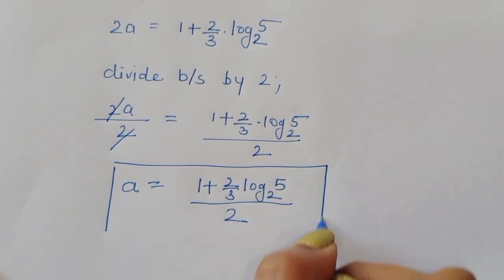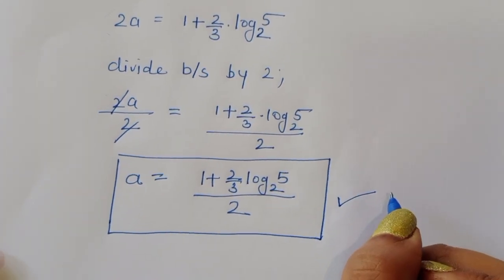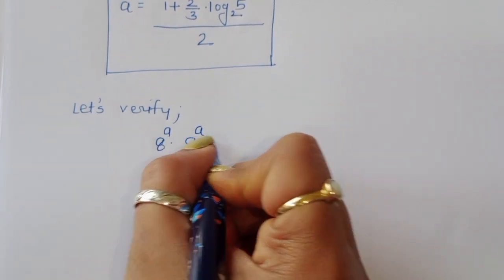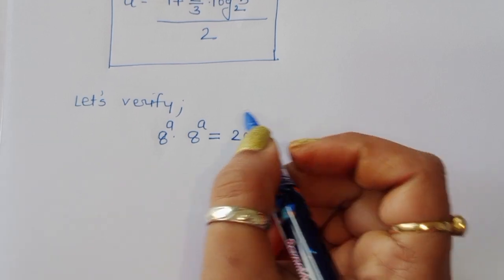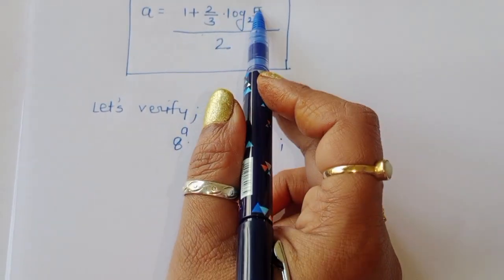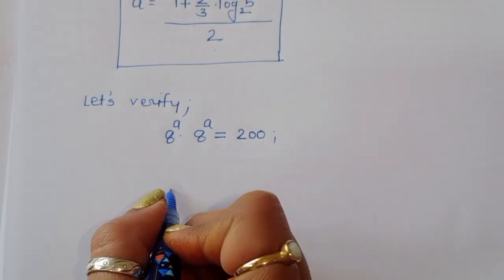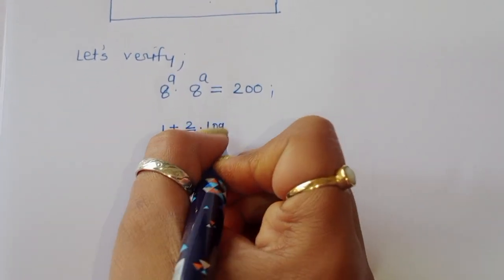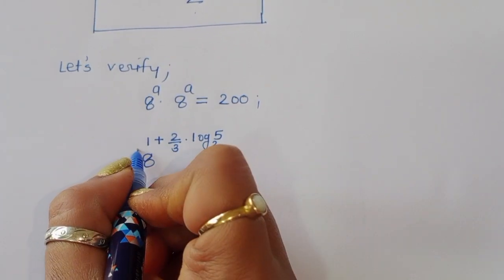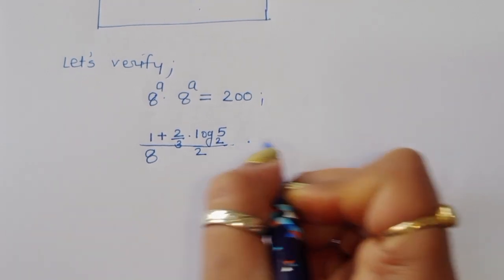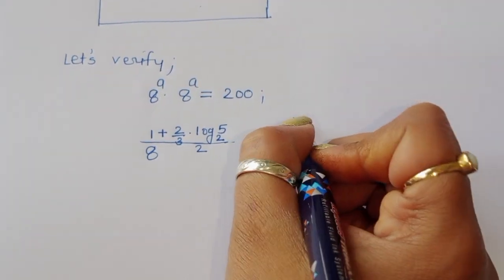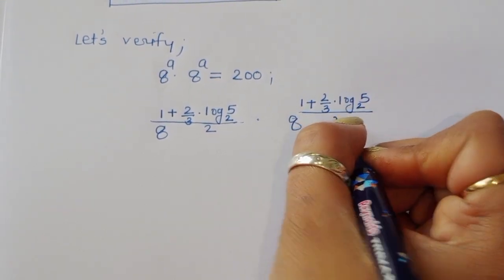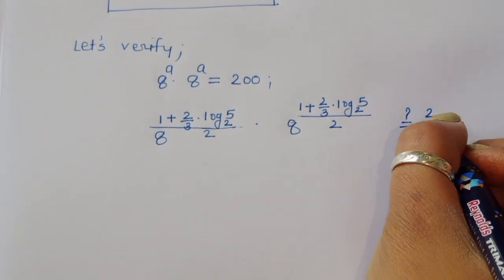Now let's verify whether this is correct. The question is 8 power a times 8 power a equals 200. We have to verify the value of a is 1 plus 2 upon 3 times log of 5 to the base 2, divided by 2.